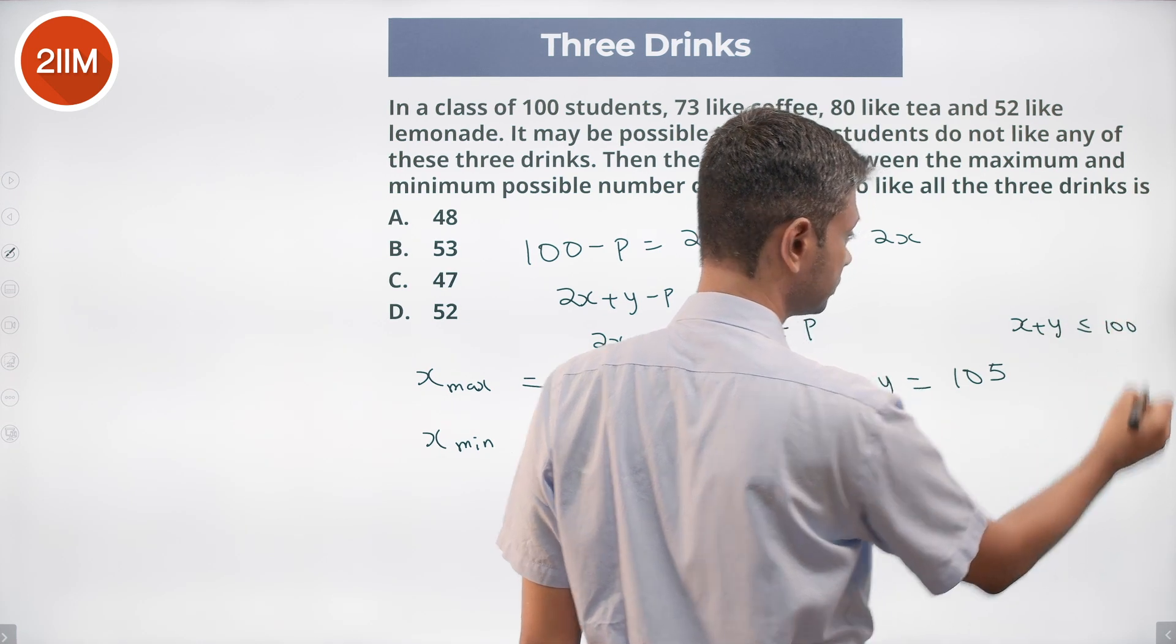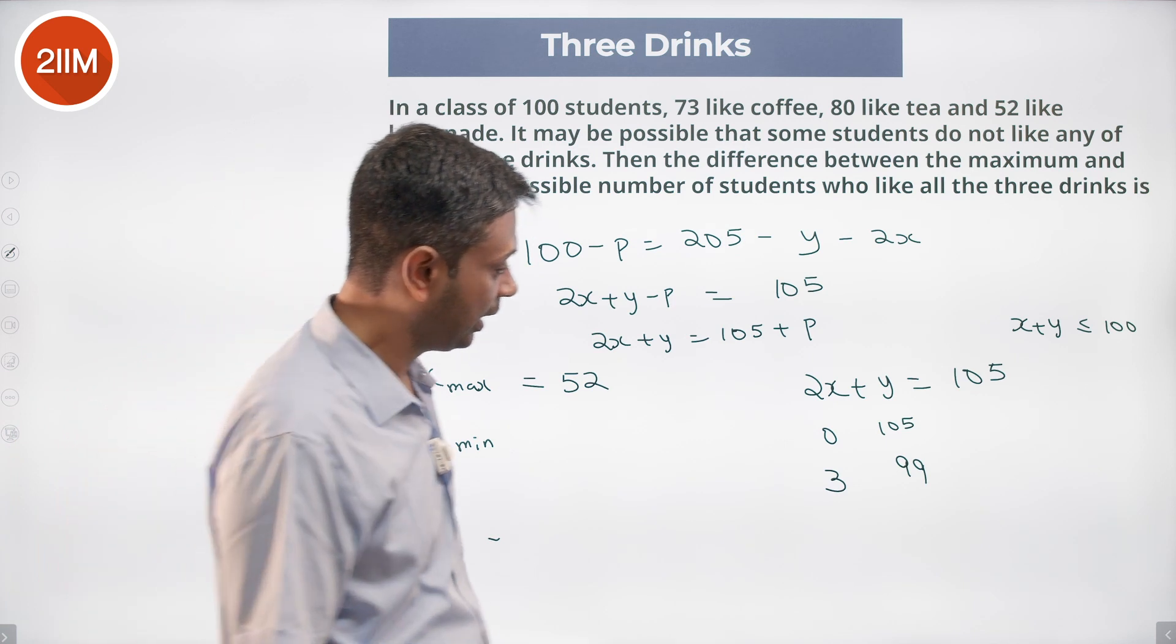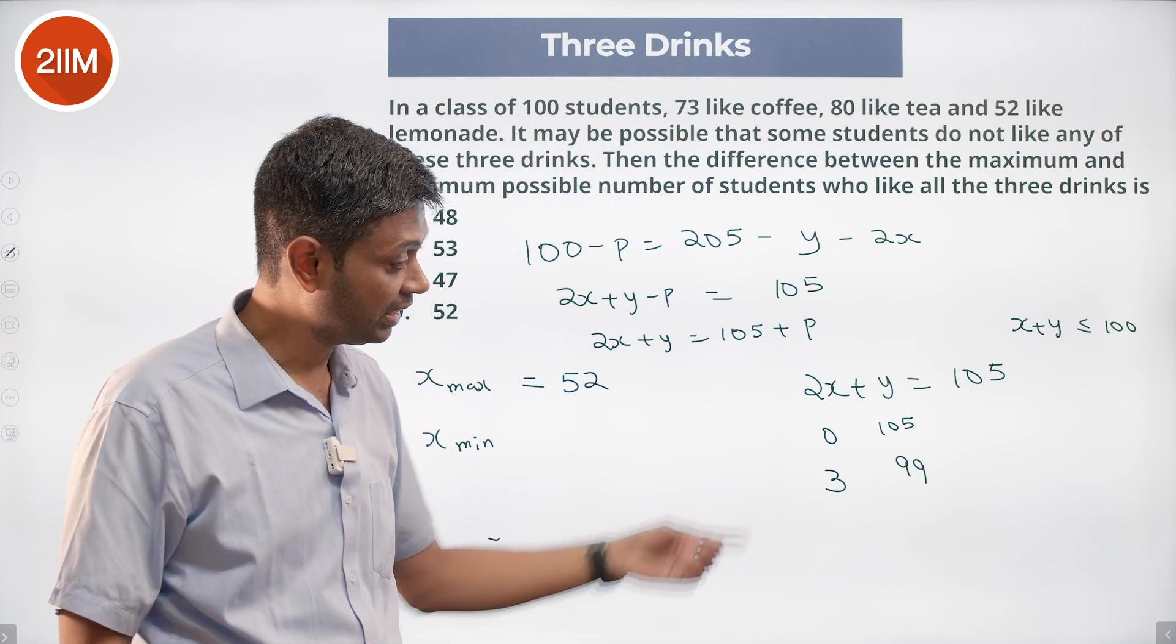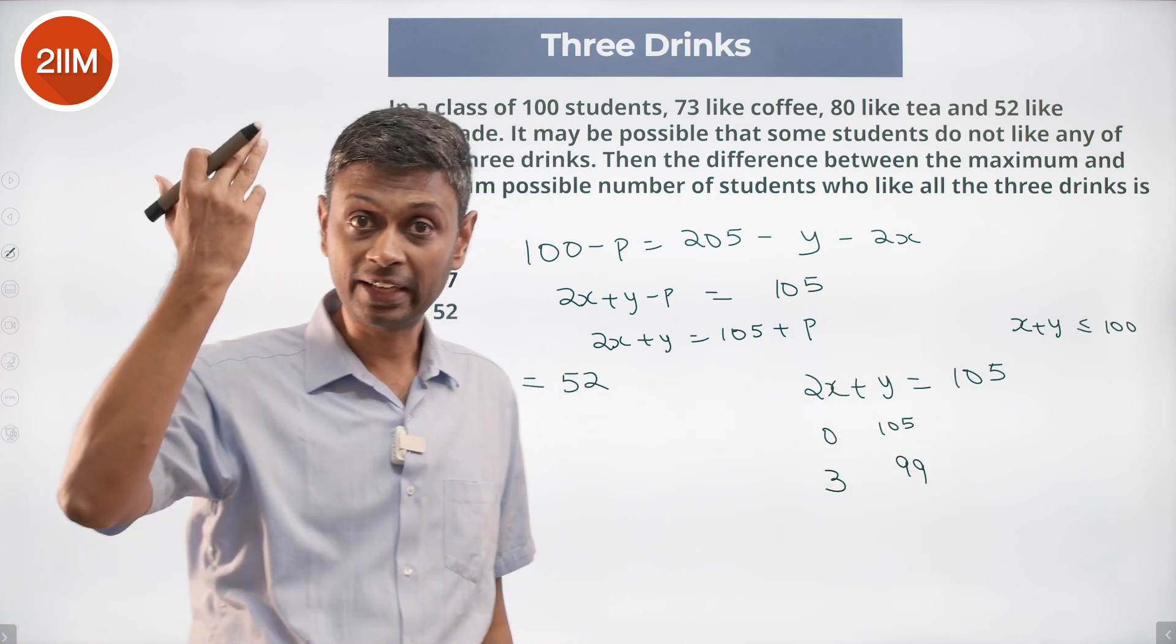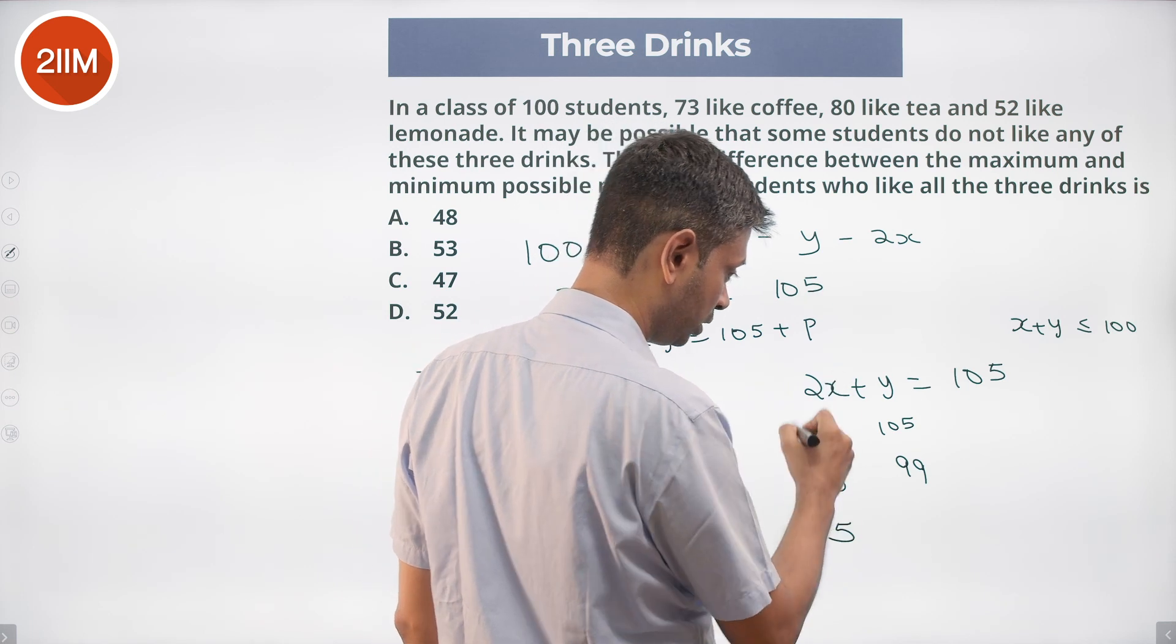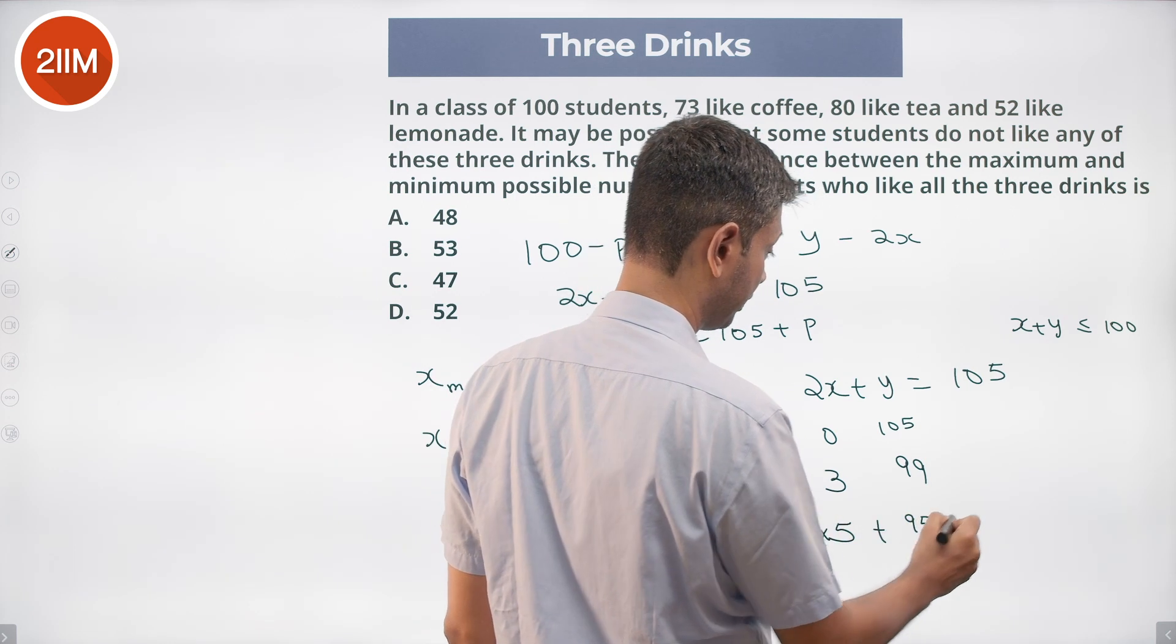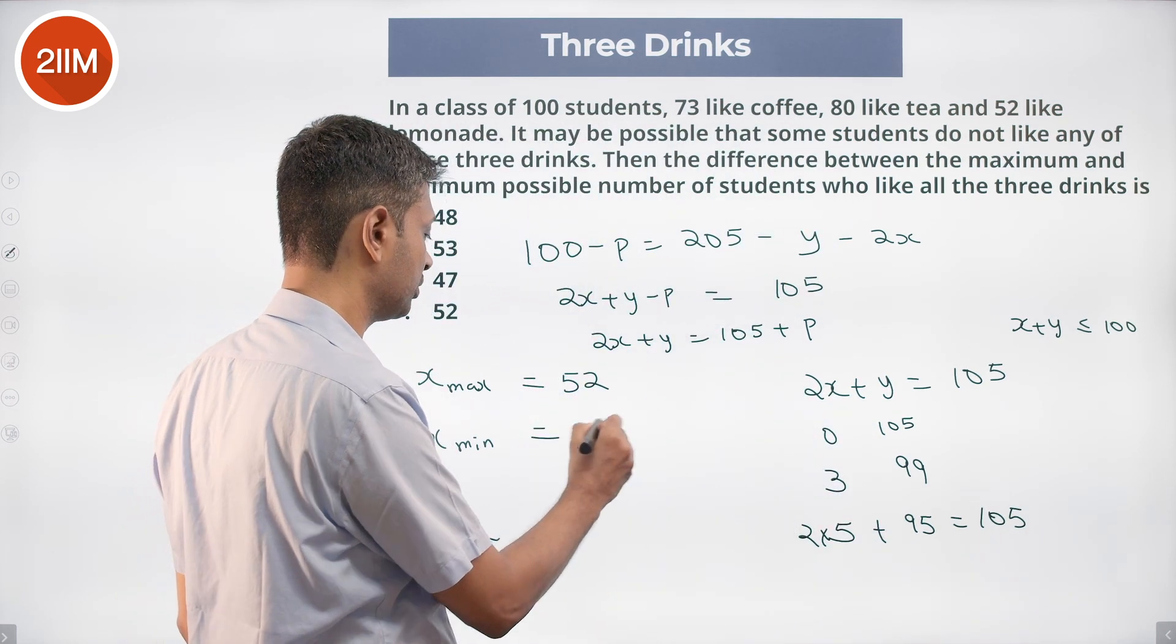We keep that also in mind. We say hey, if I keep x as 3 it doesn't work. If I put x as - for every one unit I increase x, I can decrease y by 2, so I'm going to decrease the total by 1. I take x up by 5. X goes to 5. 2 into 5 is 10, y goes to 95. 2 into 5 plus 95 is 105, x plus y is 100. That can work. So x minimum is 5.